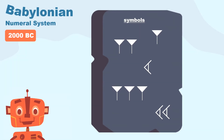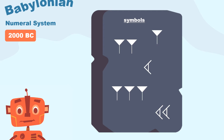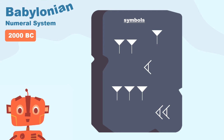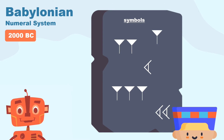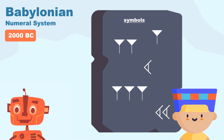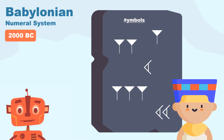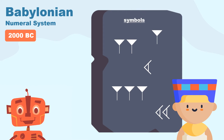The Babylonian numeral system was one of the earliest numeral systems and appeared around 2000 BC — a very long, long time ago. It was created and used by the Babylonians. They used symbols like triangles and lines to represent numbers. It is considered one of the oldest numeral systems.